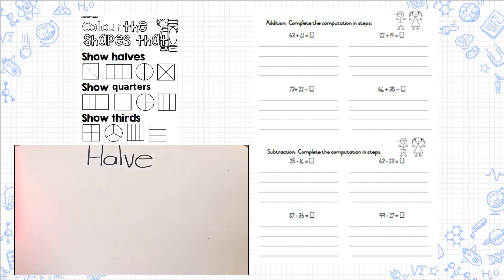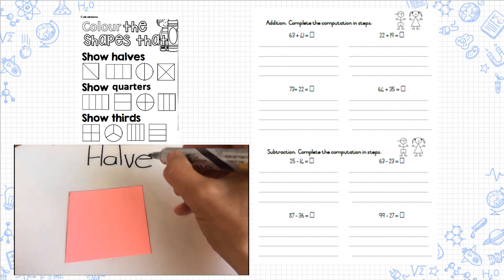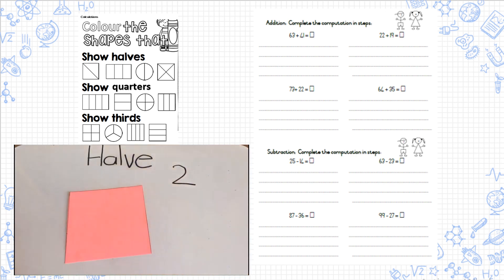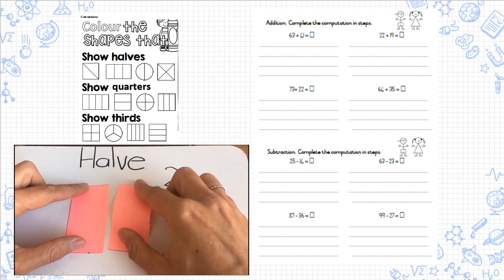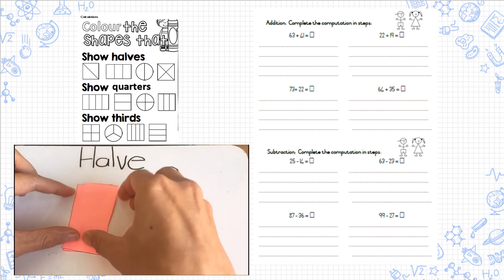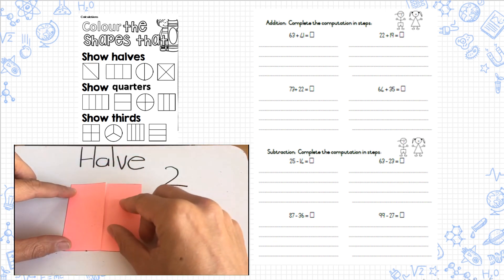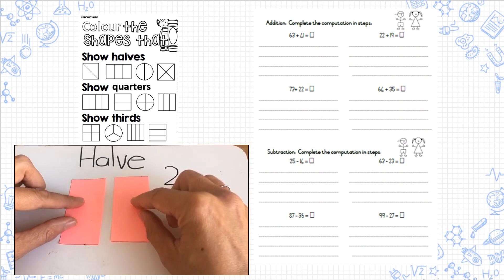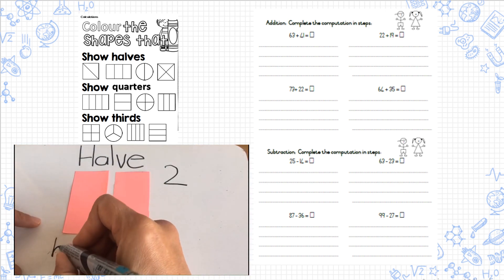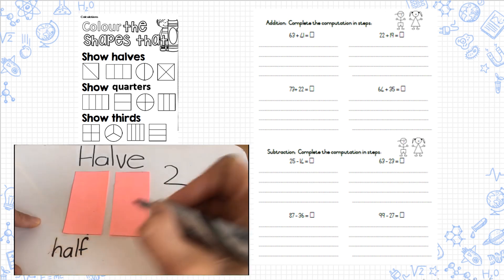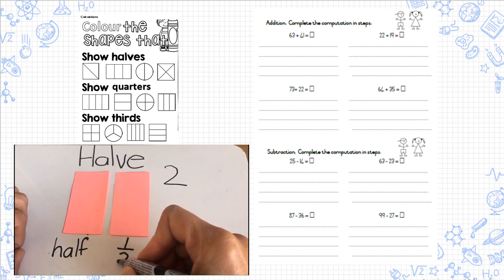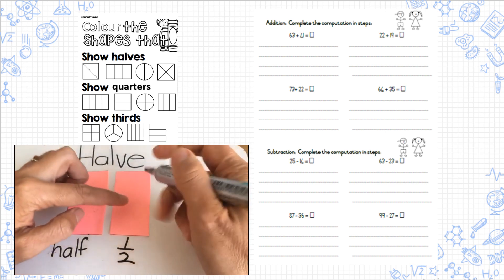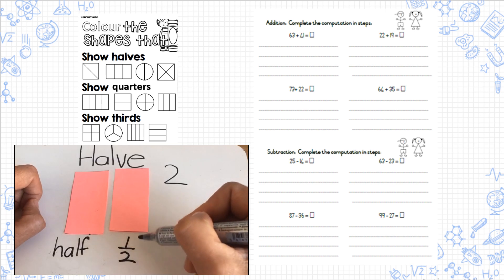When we have something and we divide it into two equal parts, so now I've got two equal parts - they fit on top of each other, they are the same size - it was one whole and then I cut it into two parts and we call this a half. Now we can also write this. This is one of the two parts. I cut it into two parts and this is one of them, so we can also write a half as one over two.